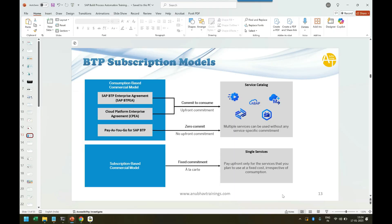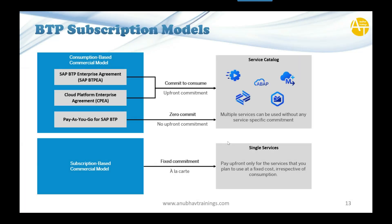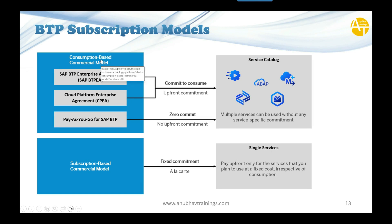When your company takes a BTP productive account, when your company actually buys BTP, what are the options and what are the subscription models you can choose from? There are two types of commercial plans. The first plan is called consumption-based plan, and the second is called subscription-based plan.